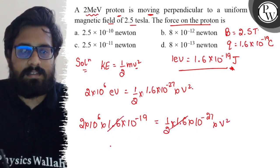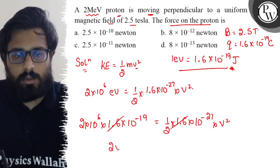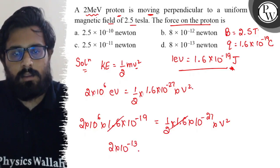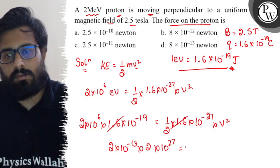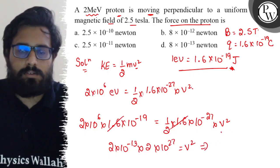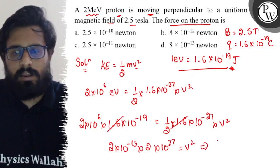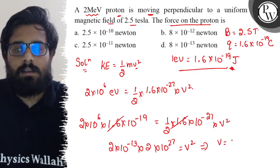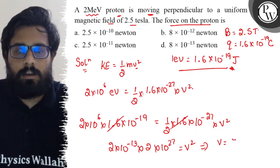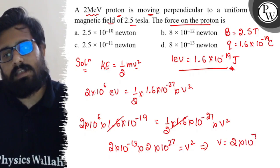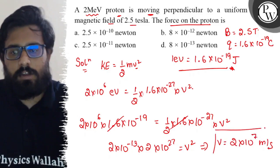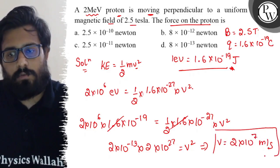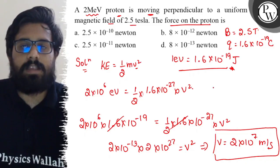The 1.6 and 1.6 cancel out on both sides. You are going to get 2 into 10 to the power minus 13 into 2 into 10 to the power 27 equals v square. When you solve this, v square gives a value of v as 2 into 10 to the power 7 meter per second. So the velocity of the proton is 2 into 10 to the power 7 meter per second.